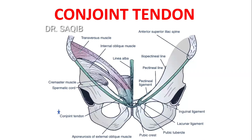Hi, I am Dr. Sakeh Mansour and today I will discuss with you the anatomy of the conjoint tendon, which is very important as it strengthens the anterior abdominal wall and prevents direct inguinal hernia from occurring.